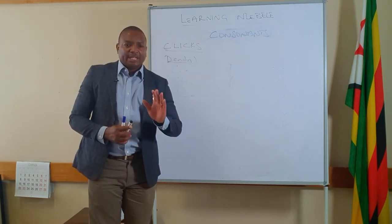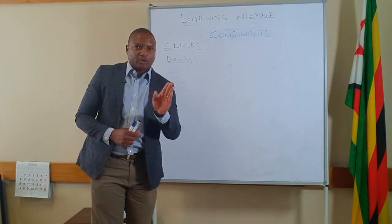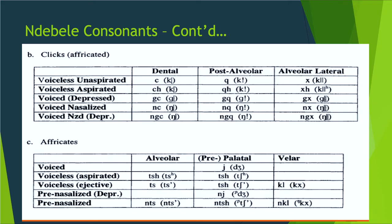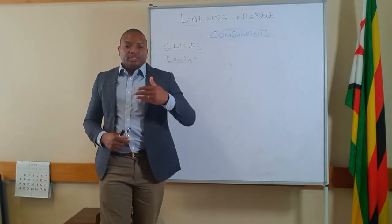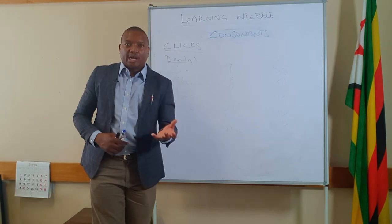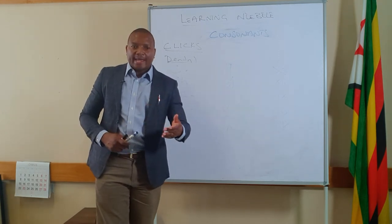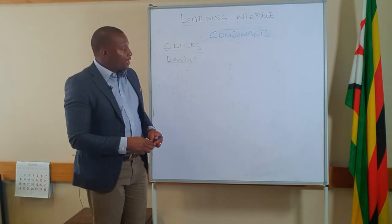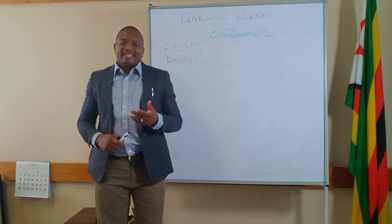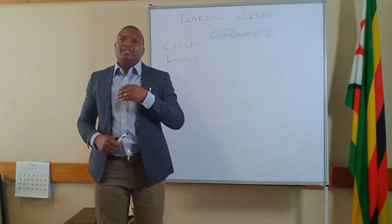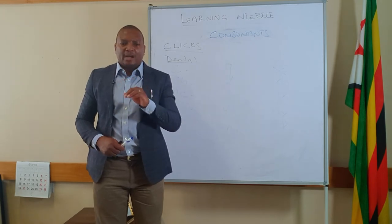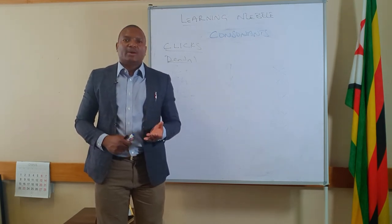Lastly, which are not clicks, we've got affricates. Remember we talked of fricatives — now we've got affricates, which are a combination of a stop sound and a fricative. Under alveolar we've got sounds like 'cha', 'chaya', 'ta', 'ta', 'ga', which is spit from the tongue.